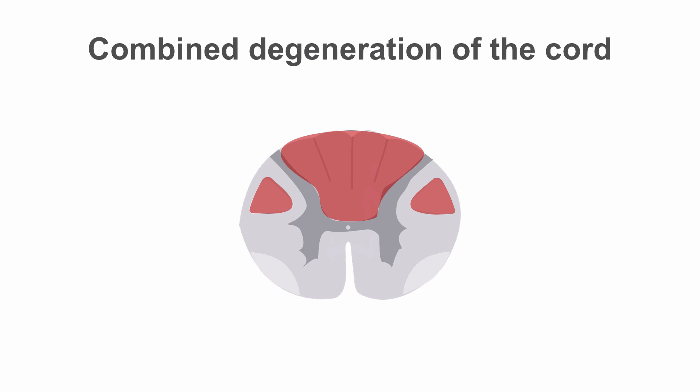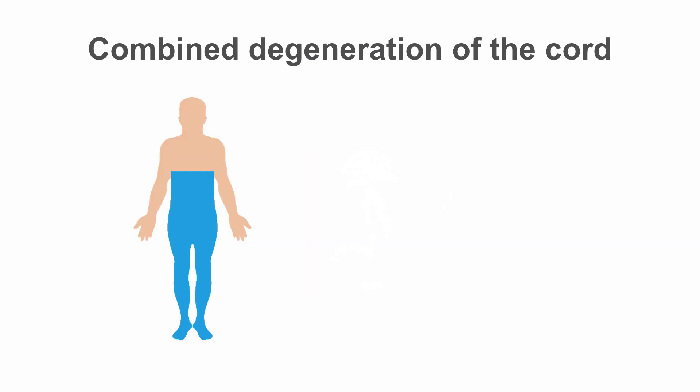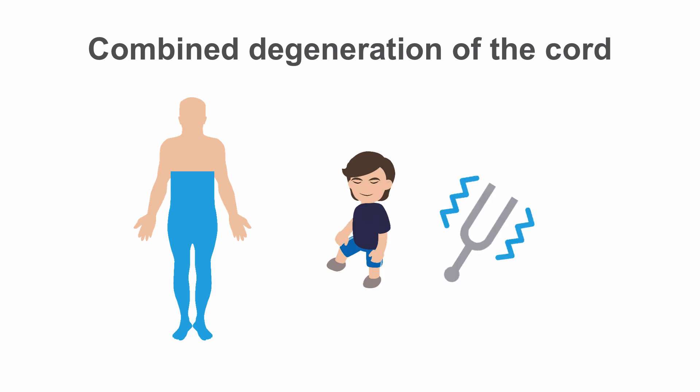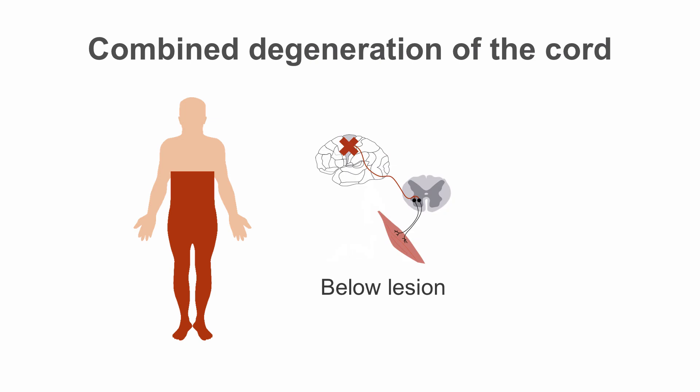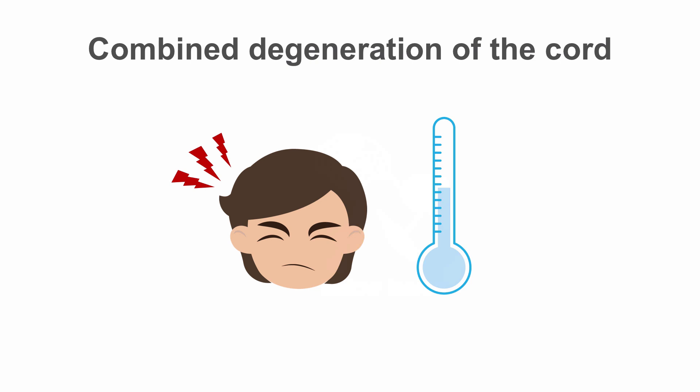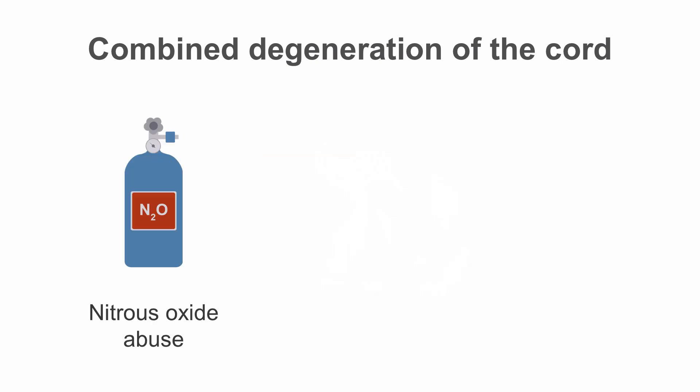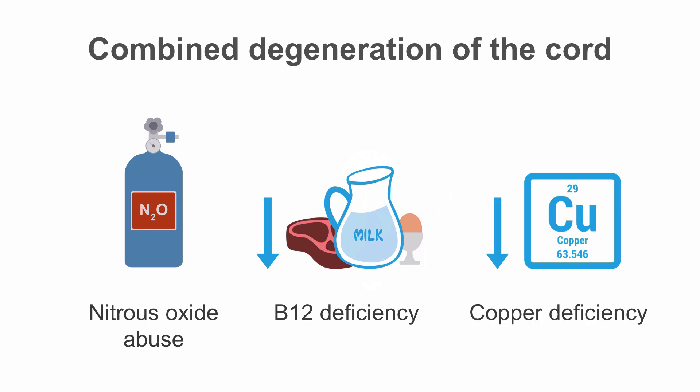In combined degeneration, previously referred to as posterolateral column syndrome, we see damage of the posterior columns and the lateral corticospinal tracts. Signs include loss of proprioception and vibration sensation, as well as loss of motor function below the level of the lesion where we see an upper motor neuron picture. Because the spinothalamic tract is not affected, pain and temperature sensibility will be normal. Combined degeneration can occur acutely, such as when someone abuses nitrous oxide, or gradually due to absorption issues from pernicious anemia. Copper deficiency also causes this rarely. Damage is usually reversible if treated early.